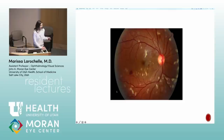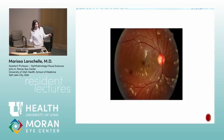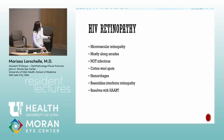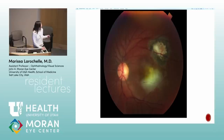Cotton wool spots and hemorrhages: differential includes radiation retinopathy, diabetic retinopathy, and HIV retinopathy — they look the same. HIV retinopathy is not infectious and resolves once CD4 counts improve. Buzzword for toxoplasmosis: retinal whitening adjacent to a pigmented scar.